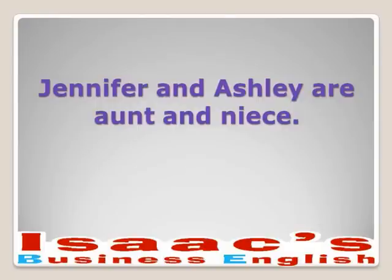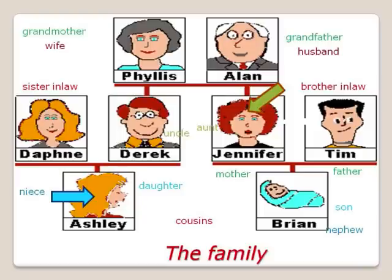Jennifer and Ashley are aunt and niece. Jennifer and Ashley are aunt and niece. Aunt también se dice aunt, casi como si fuera hormiga — aunt o aunt, las dos son correctas. Jennifer and Ashley son tía y sobrina.